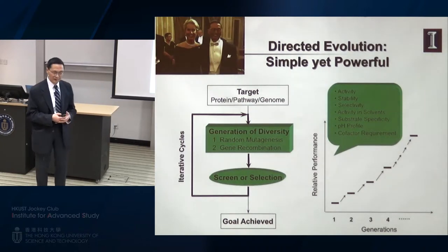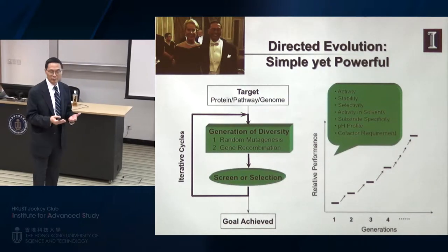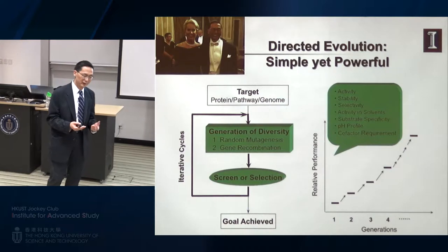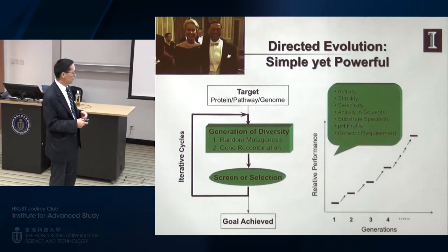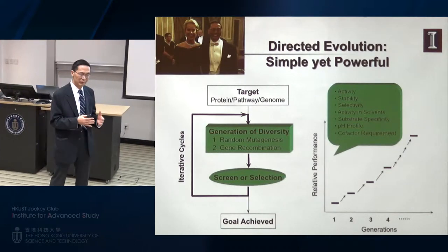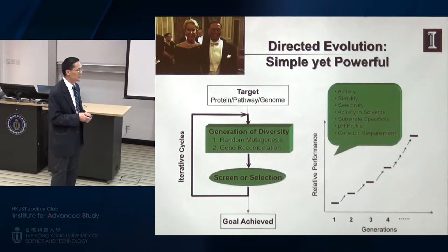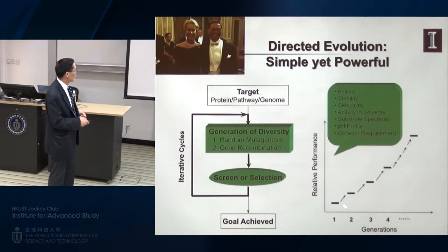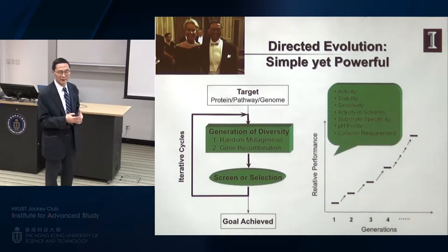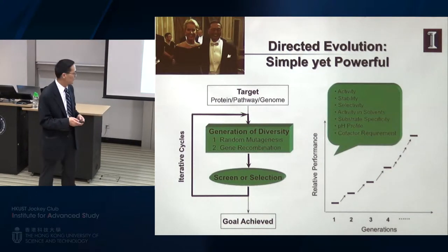Directed evolution is a very simple concept, yet very powerful. It mimics the Darwinian evolution process in the test tube, consisting of cycles of diversity generation followed by screening and selection. Initially it was applied to proteins, but later also applied to pathways, whole genomes, and even microbial ecosystems. We can use it to improve almost all kinds of protein functions — activity, stability — or create new reactivities.